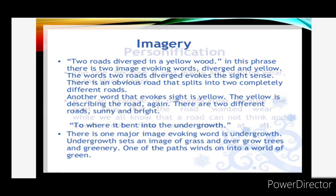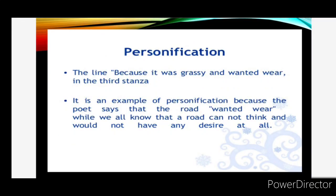Now let's have a look at another device used in the poem — personification — which means to give human attributes to non-humans. The line 'because it was grassy and wanted wear' in the second stanza is an example of personification, because the poet says that the road 'wanted wear,' while we all know that a road cannot think and would not have any desire at all. But here the poet has given human attributes to the road, so that we understand it in a better way.